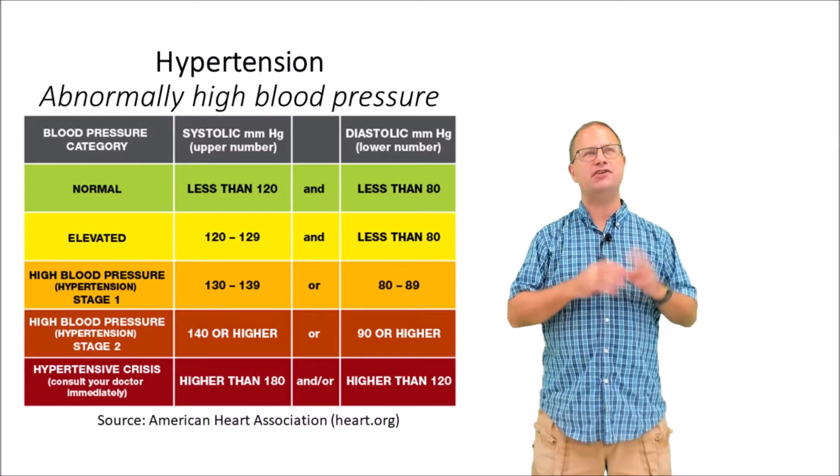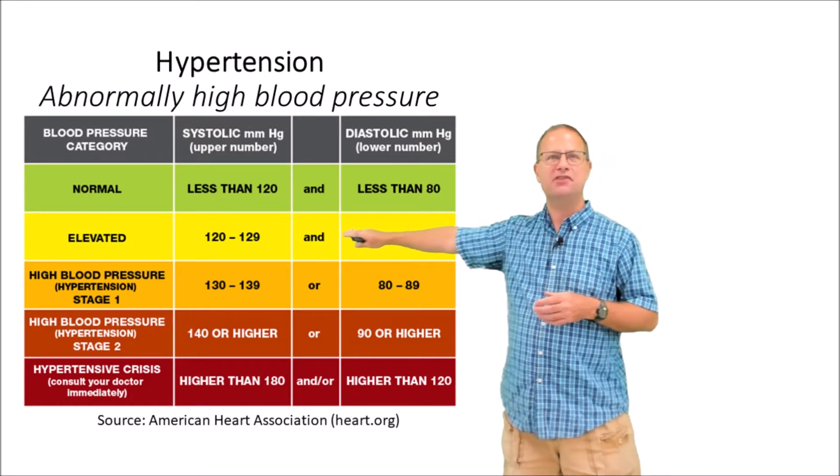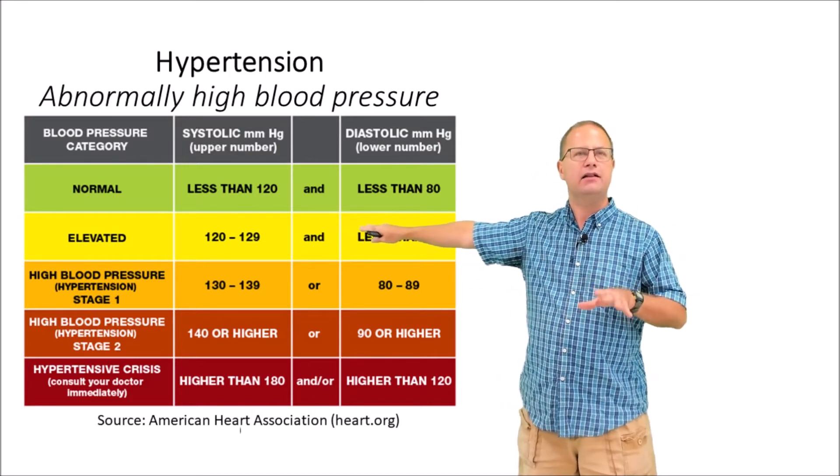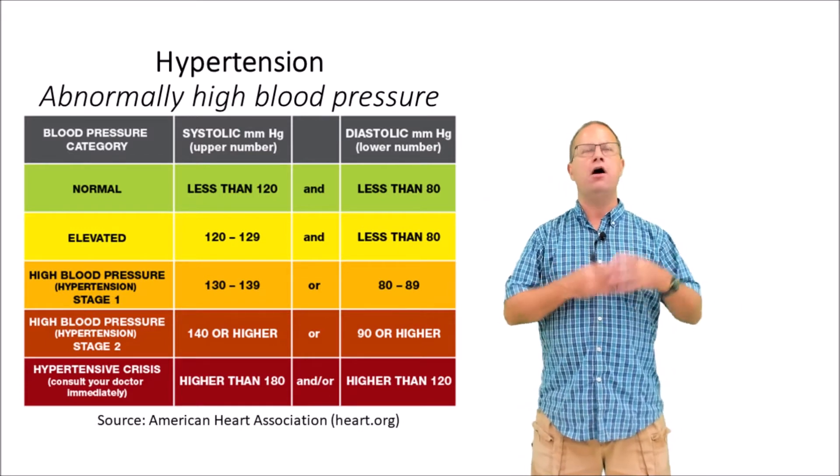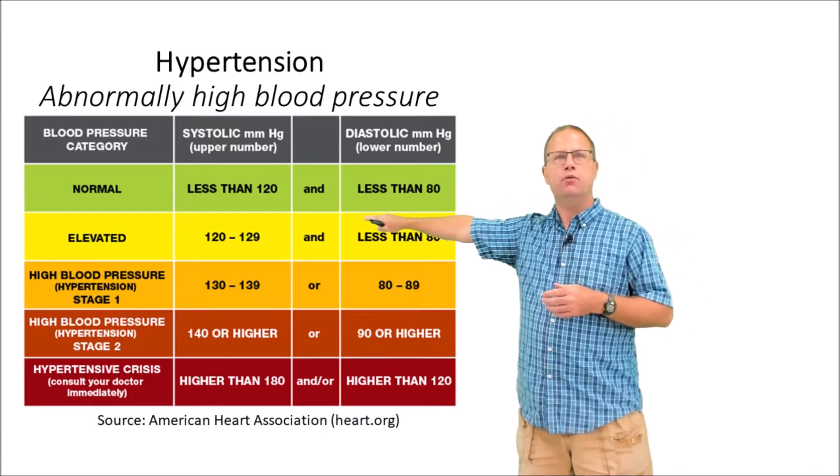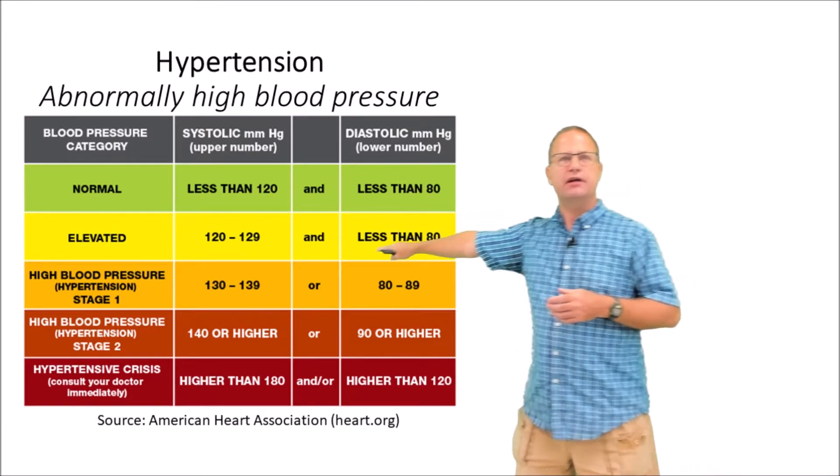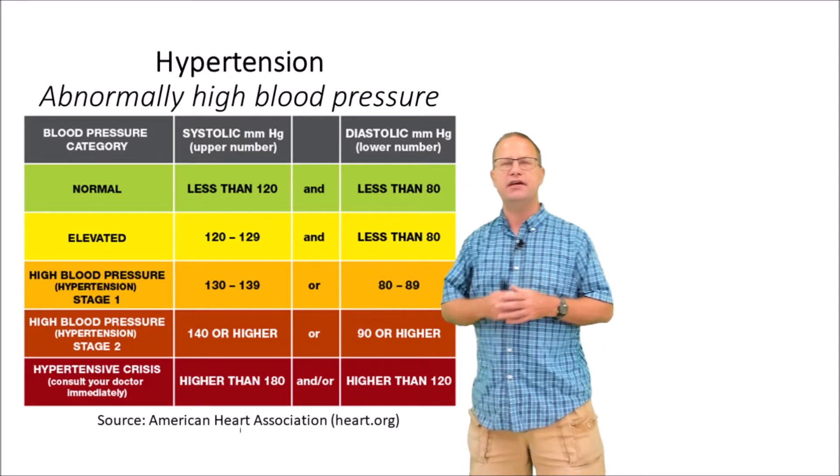The American Heart Association has revised that over the last few years, and now they consider somebody with a blood pressure of 120 over 80 a little bit elevated. Ideally, we'd love our blood pressure to be like 110 or 115 over 75 or something like that. That would be in the normal range. If we get into the 120 range, we're elevated, and if we get above that, we get into stage one hypertension, stage two hypertension, etc.